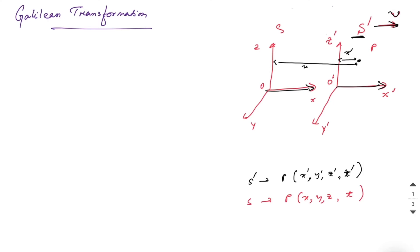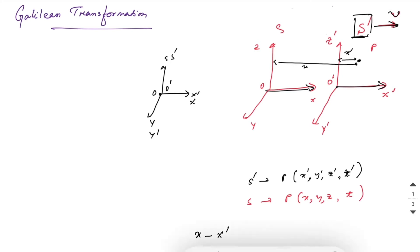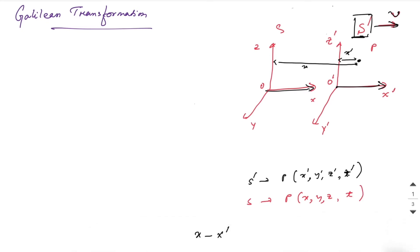So the distance traveled — initially both frames of reference S and S' were at the same position, with x and x', y and y', and origins O and O' coinciding. Then S' moves with velocity v. The distance traveled by this point P is x minus x'.